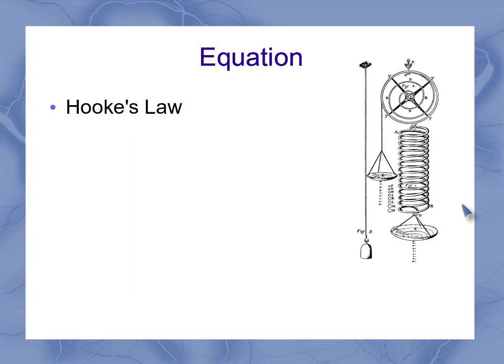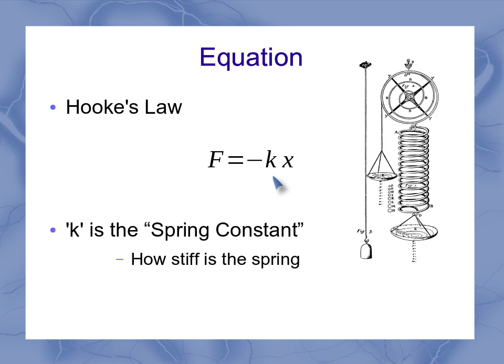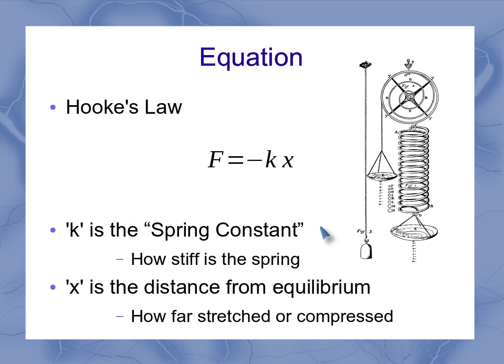And he found that almost all of these objects, as long as you didn't stretch them too far, followed a nice linear relationship. And so Hooke's law tells us that the force exerted by the spring is minus kx, where that k is the spring constant, a measure of how stiff the spring is. And our x is the distance from equilibrium, or how far stretched or compressed that spring is.